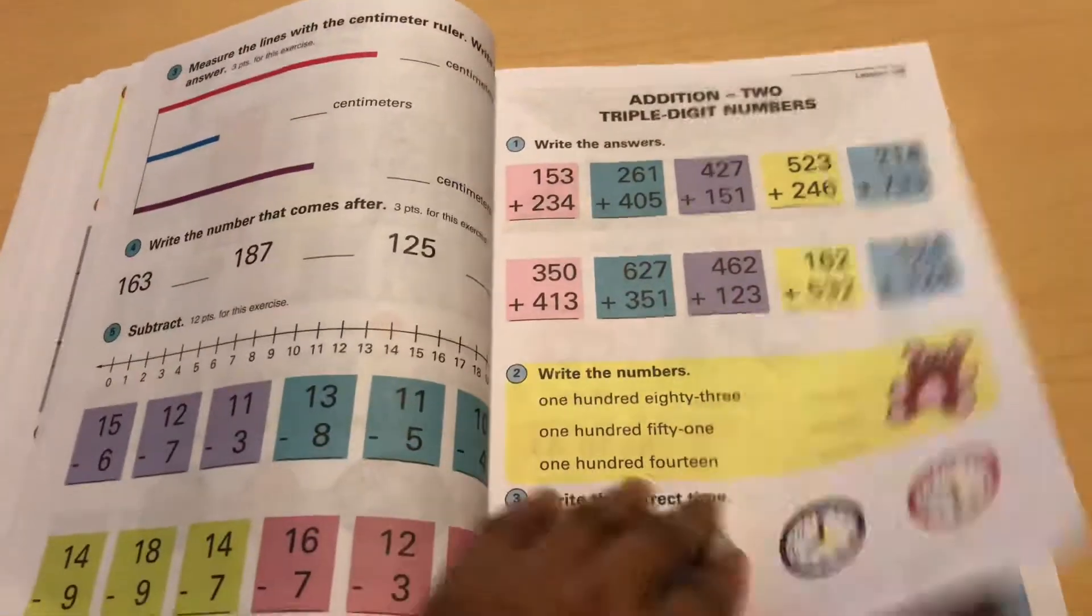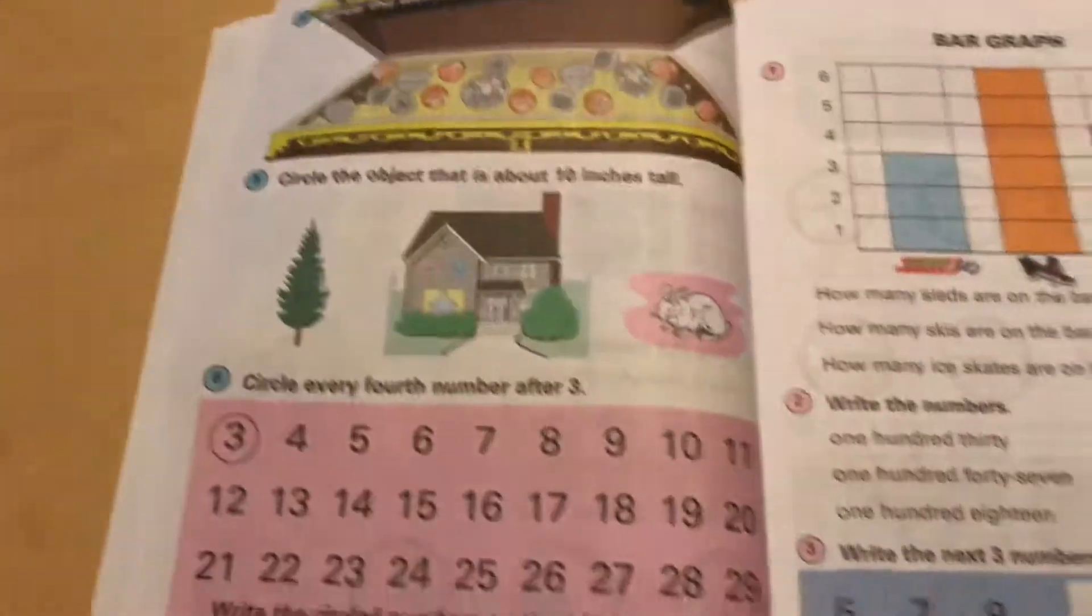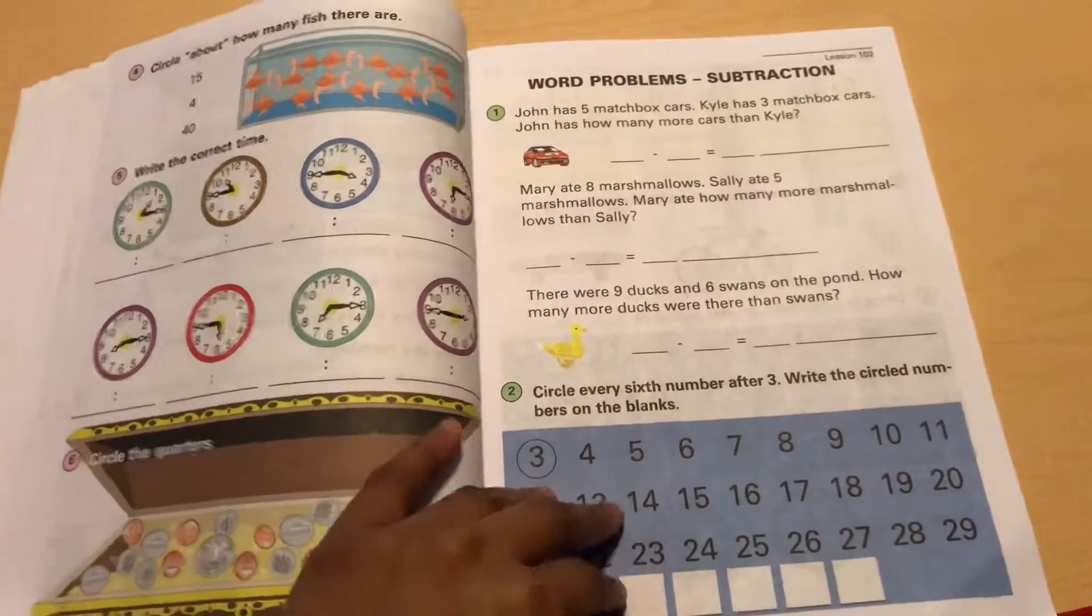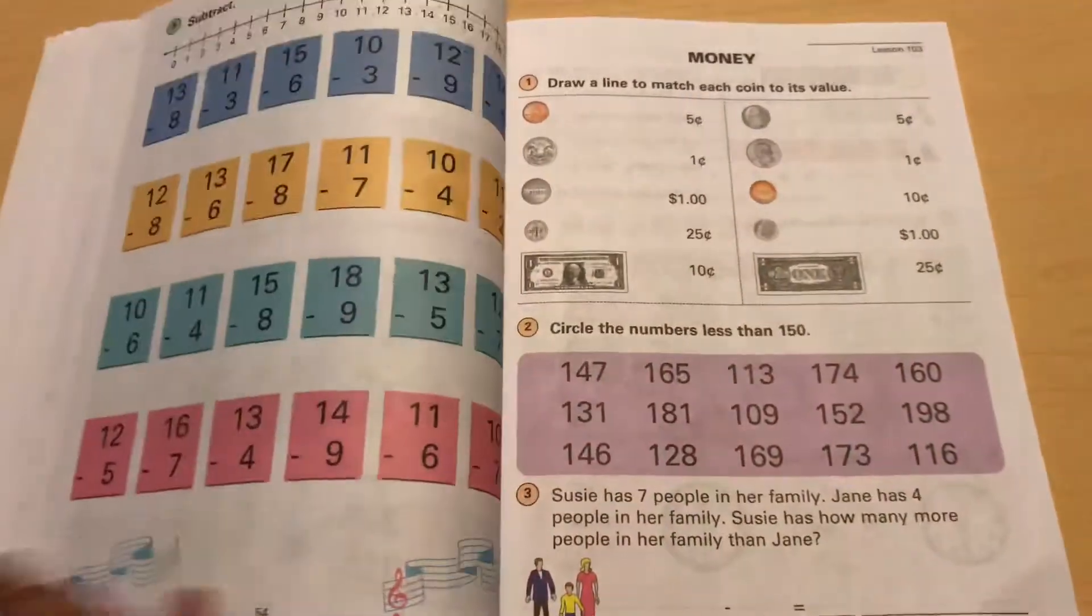A lot of people may think that this is a lot because literally this is a lesson plus this. A lot of people may think that this is a lot to do for a child in math. But this is the only thing we do in math. She does a lesson a day and then we're done with math.